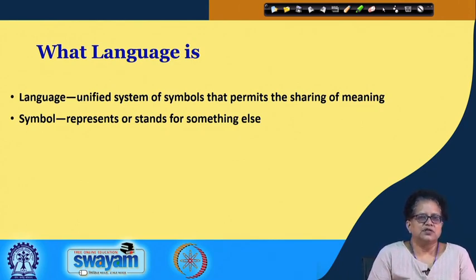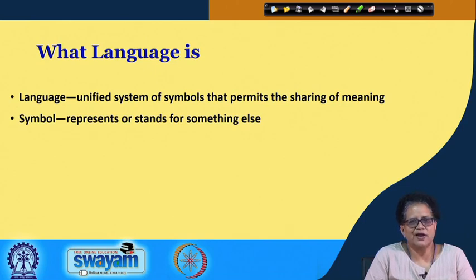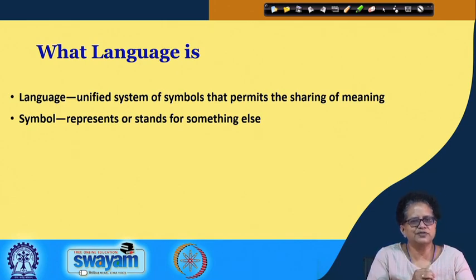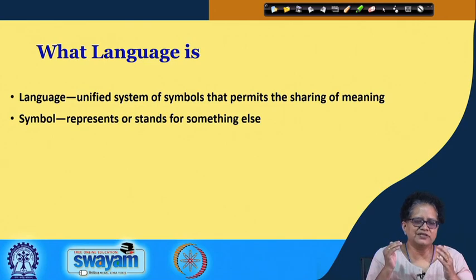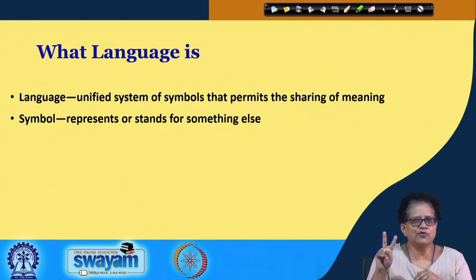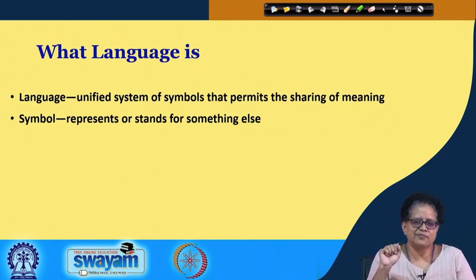Let us come to the topic of what language is. Language can be defined as a unified system of symbols that permits the sharing of meaning. We have already emphasized at the outset of this lecture that language and meaning can help minds meet. In other words, if all of us agree that 'we' stands for 'we' — and we only — that is a unified system of symbols permitting the sharing of meaning.